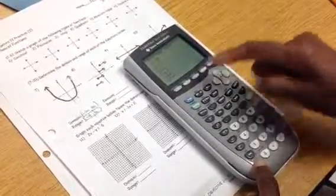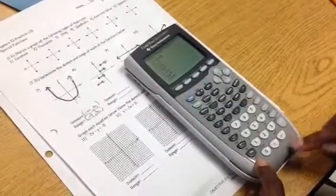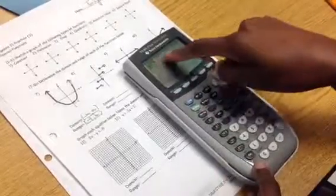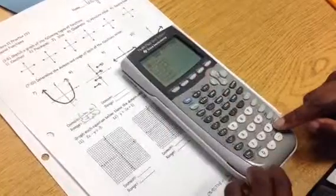Go to your y equals key. You see that? That's a negative. Put in a negative. Then, you're going to go to your math key. Go over to number. Enter. That's an absolute value.